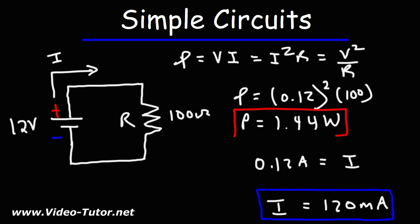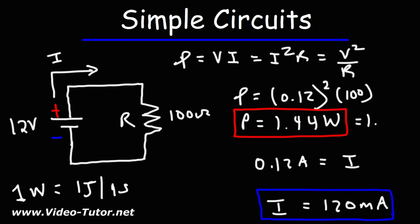It's important to understand what that means. Power is the rate at which energy is being transferred, so one watt is one joule per second. This means that 1.44 joules of electric energy is being transferred from the battery to the resistor every second. So in two seconds, 2.88 joules of energy will have been transferred. In 10 seconds, 14.4 joules of energy will have been transferred from the battery to the resistor. That's what power tells you — the rate at which energy is being transferred from one object to another.